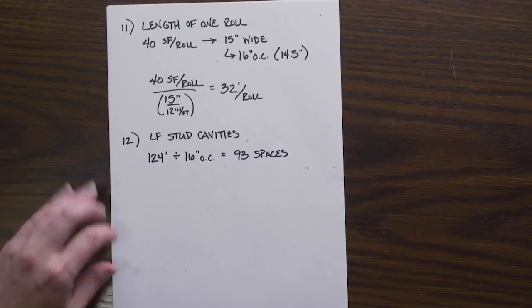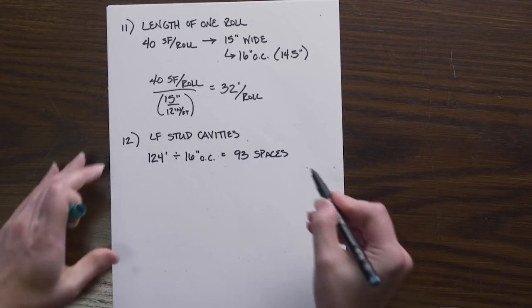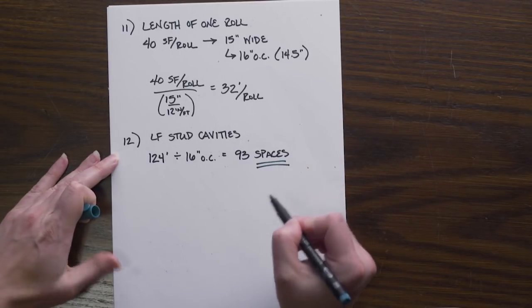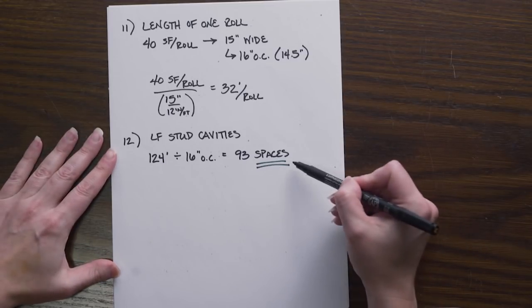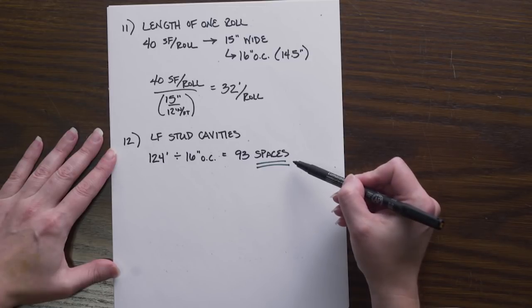This is where it's different. In this situation we actually want the number of spaces. We're dealing with where the insulation goes, and the insulation goes in the space. So we don't want to add or subtract one. We actually want the 93 spaces.